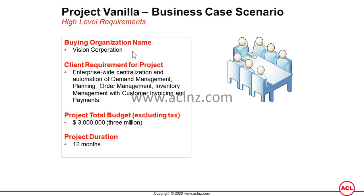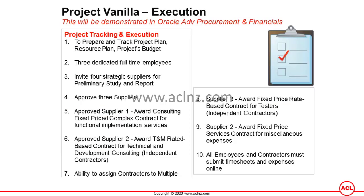As you would recall, we had the buying organization named Vision Corporation, and their requirement was an enterprise-wide centralization and automation of demand management, planning, order management, inventory management, with customer invoicing and payment. This is what they want to automate in their organization. The total project budget is three million dollars and the project duration is 12 months. In terms of project execution, they wanted to prepare and track the project plan, resource plan, and project budget.